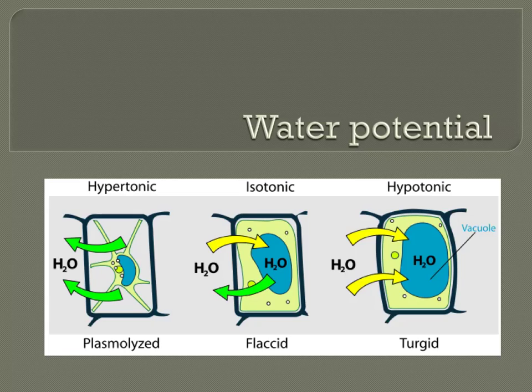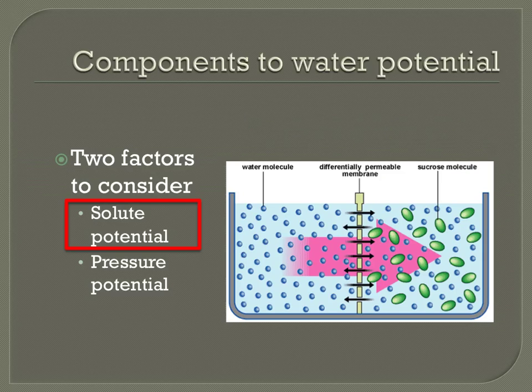The picture on this slide shows the movement of water into and out of cells in different types of environments. When calculating water potential, there are two pieces of information that you need to know. First, there is the solute potential. What this really means is, due to diffusion, where will water or the solute naturally move? As shown in this picture, water would naturally move from the highest concentration, the side designated pure water, to an area of lower concentration, the side designated solution.